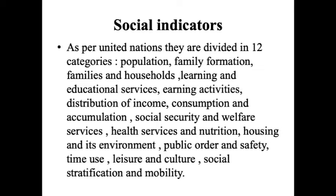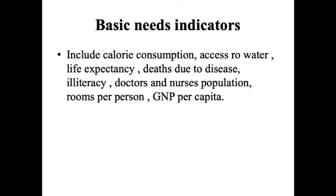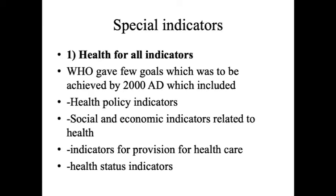Social indicators, as per the United Nations, are divided into 12 categories including population, family formation, households, learning and educational services, earning activities, income distribution, consumption and accumulation, social security, welfare services, health services, nutrition, housing, environment, public order and safety, time and leisure, culture, social stratification, and mobility. Basic need indicators include calorie consumption, access to water, life expectancy, deaths due to diseases, illiteracy, doctors and nurses per population, rooms per person, and GNP per capita.